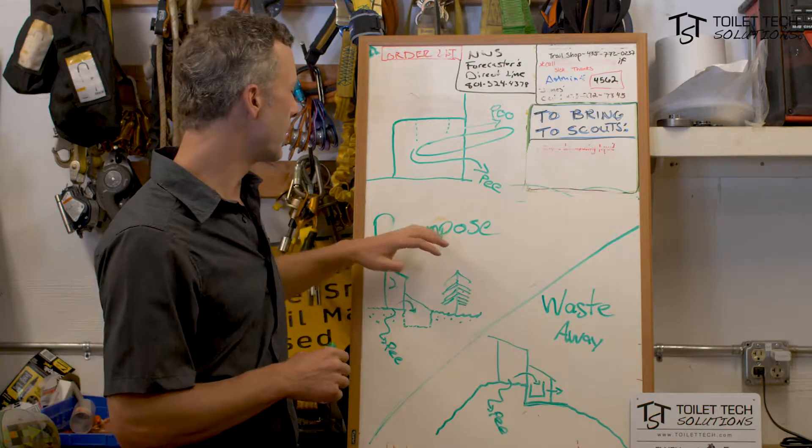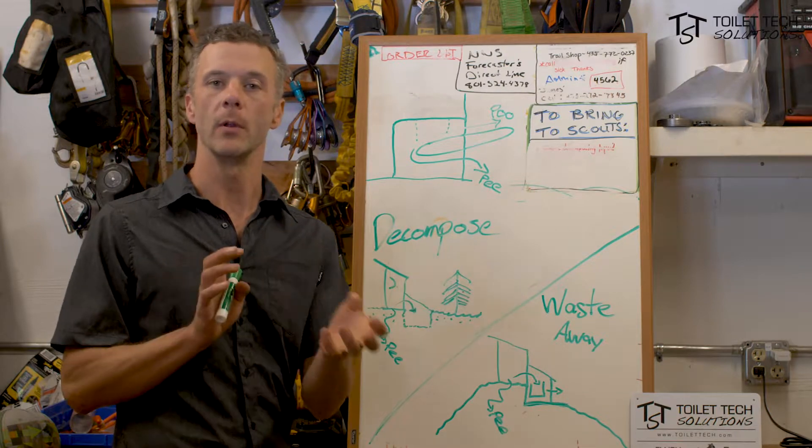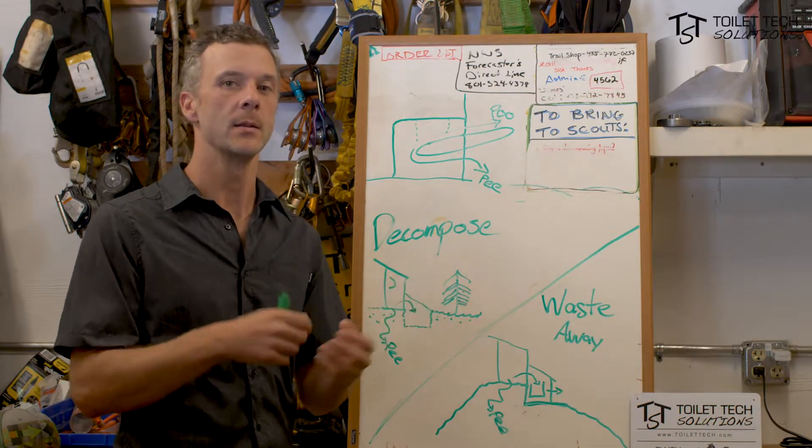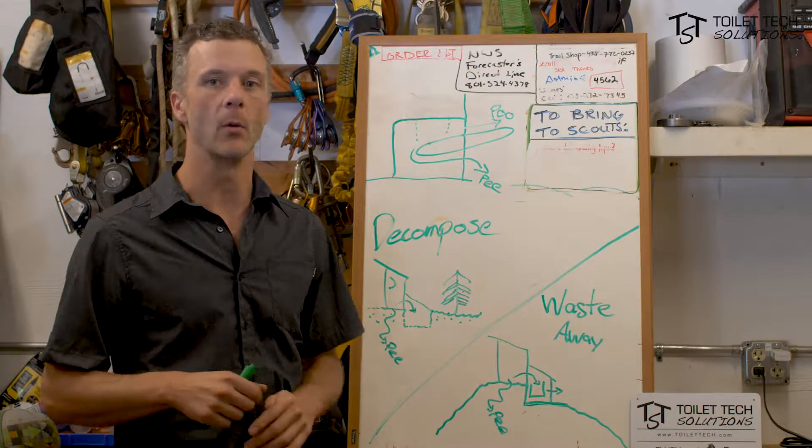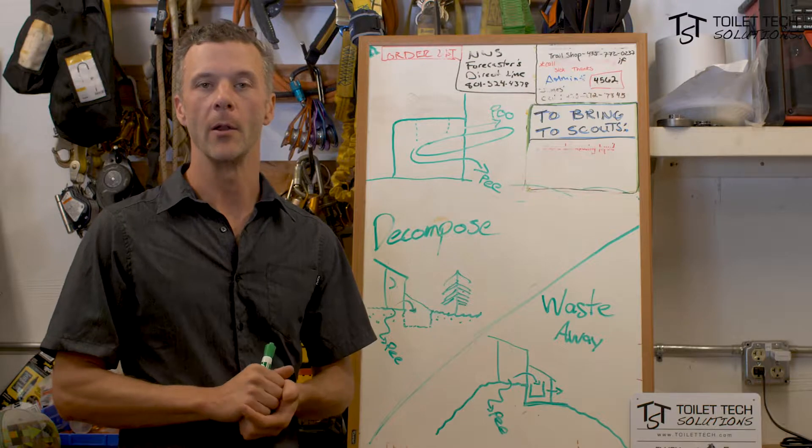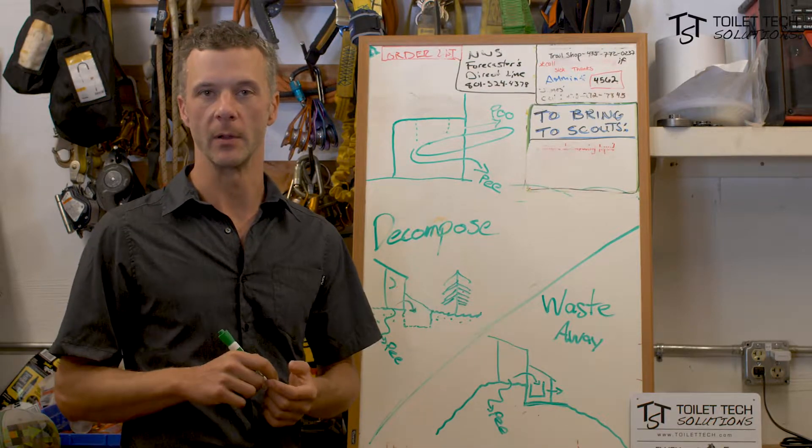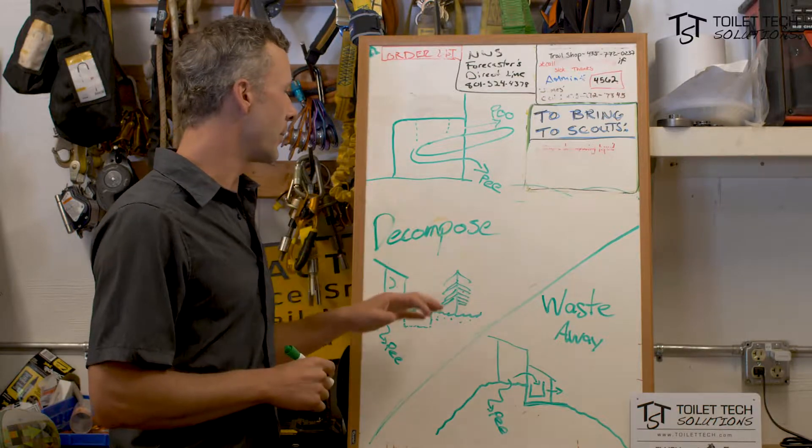It can go into a decomposing system where we facilitate soil invertebrates to eat the poo, or it can go into a bag or barrel directly for easy extraction, removal, and off-site treatment at a centralized facility like a wastewater treatment plant.